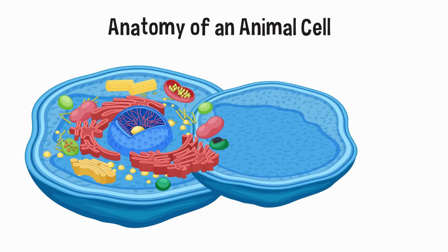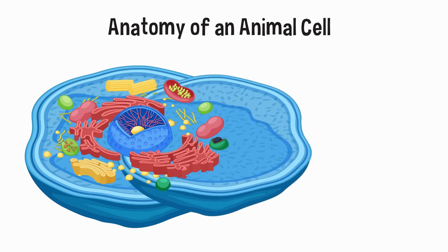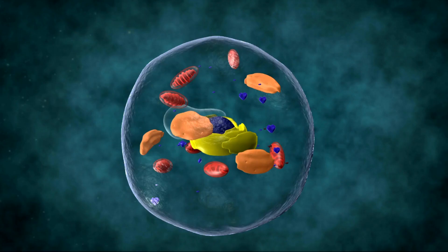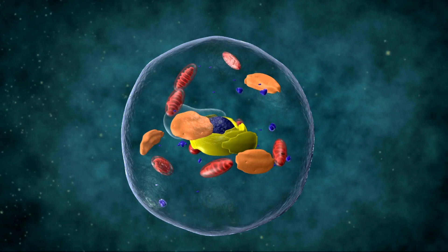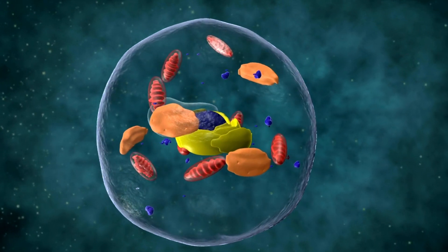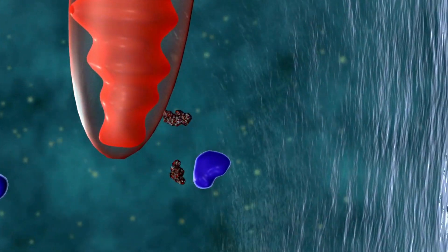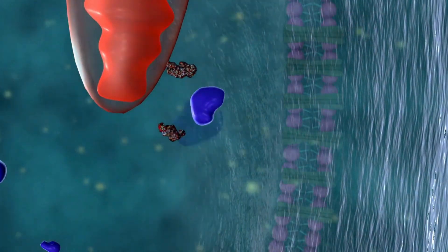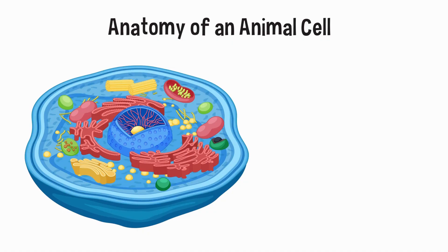The cytoplasm is a jelly-like material that contains nutrients, salts, and other membrane-bound organelles. The cell membrane controls the movement of substances that go in and out of the cell.